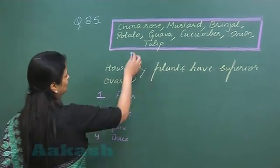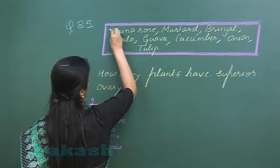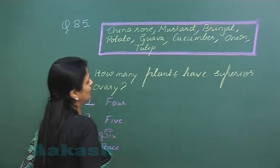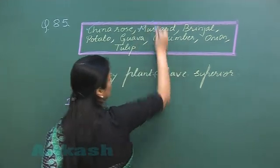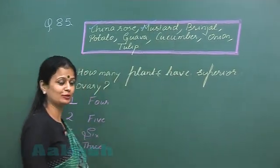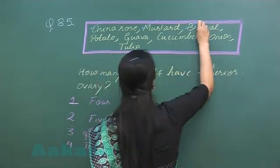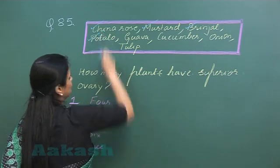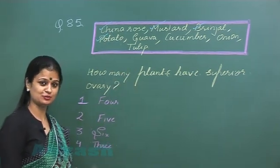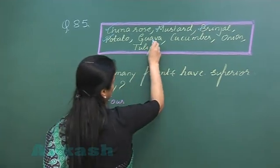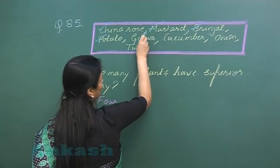Now China rose, it belongs to the Malvaceae family, possesses superior ovary. Mustard, Brassicaceae, superior ovary. Brinjal, potato, Solanaceae family, superior ovary. Guava, inferior ovary, it belongs to Myrtaceae family.